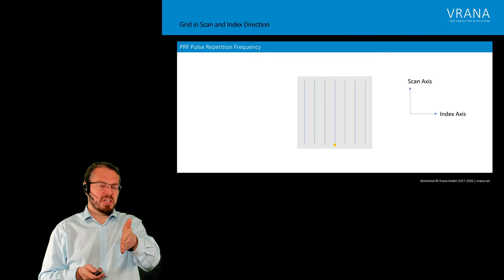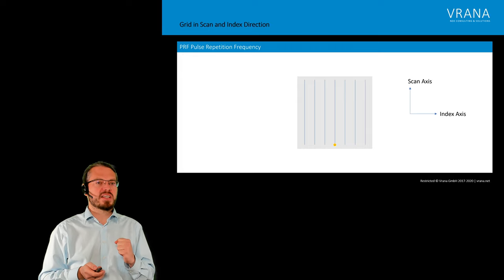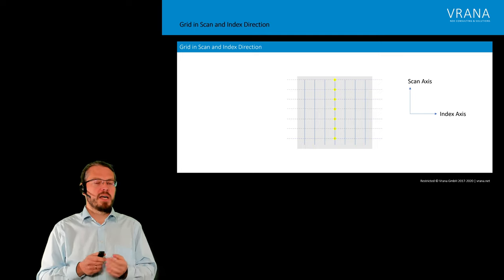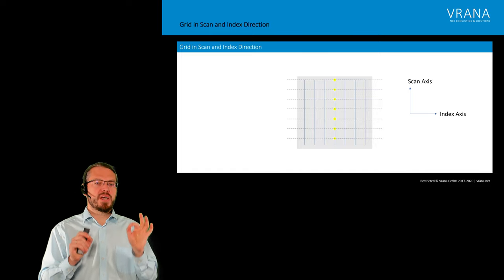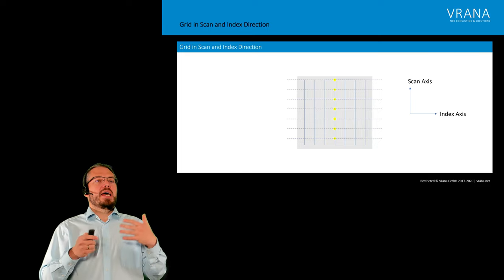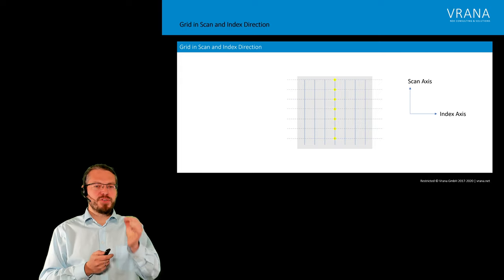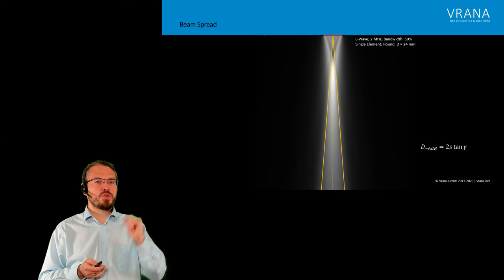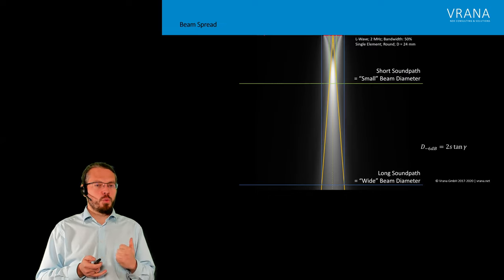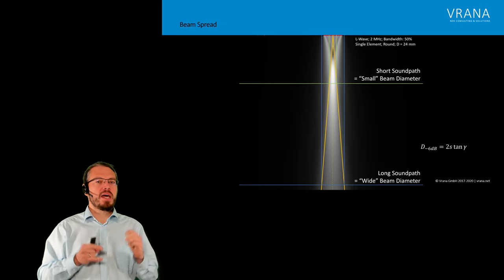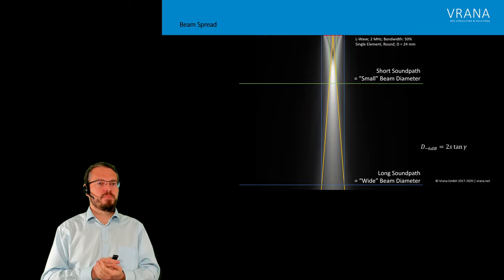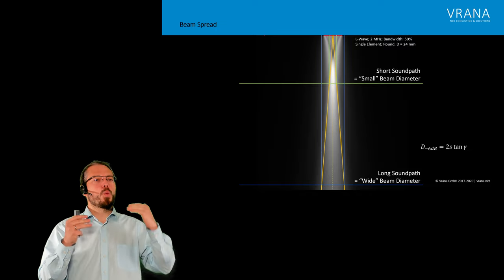If we stay on one line in our index axis and move along our scan axis with the pulsar pulsing, we get shots at certain intervals and therefore a grid. With every point in our scanning grid we are recording one A-scan. At every point we are emitting a sound field into our component, and depending on whether we are close to the surface or further away, we get a different beam diameter — and that beam diameter can be smaller or bigger than our active element.